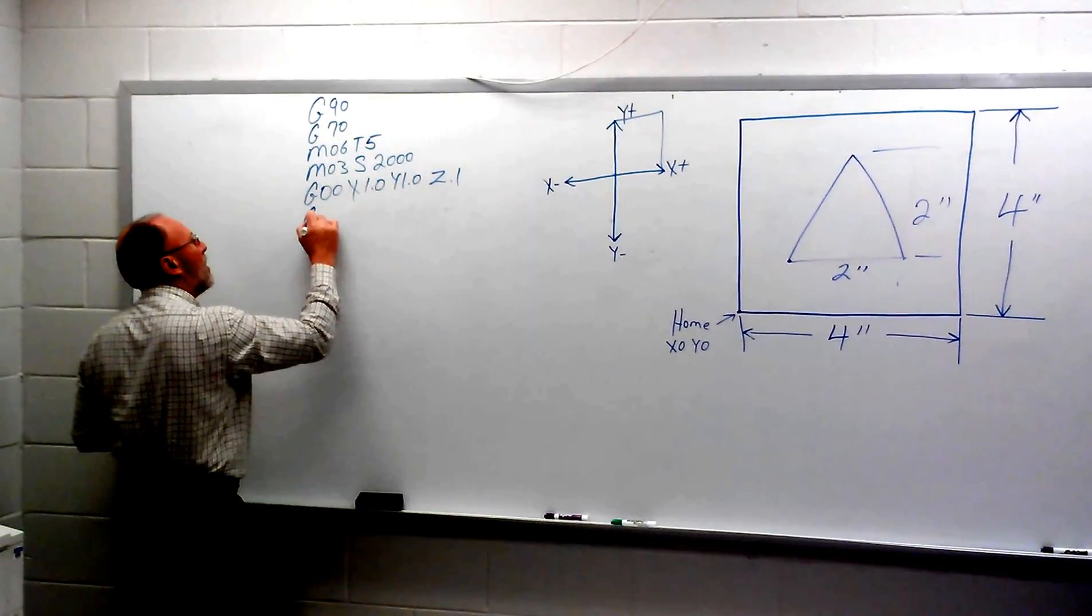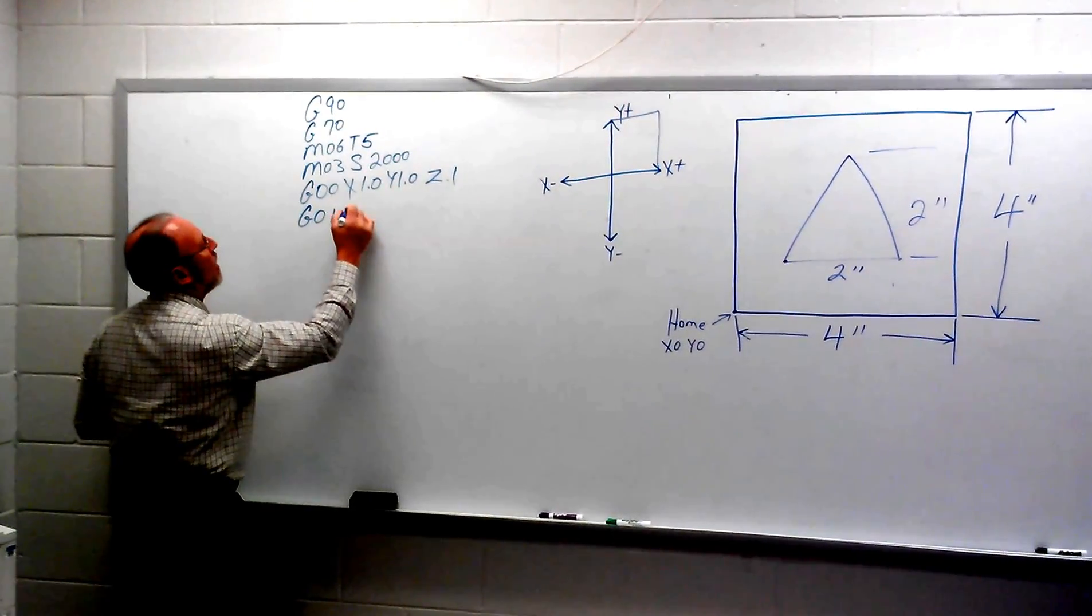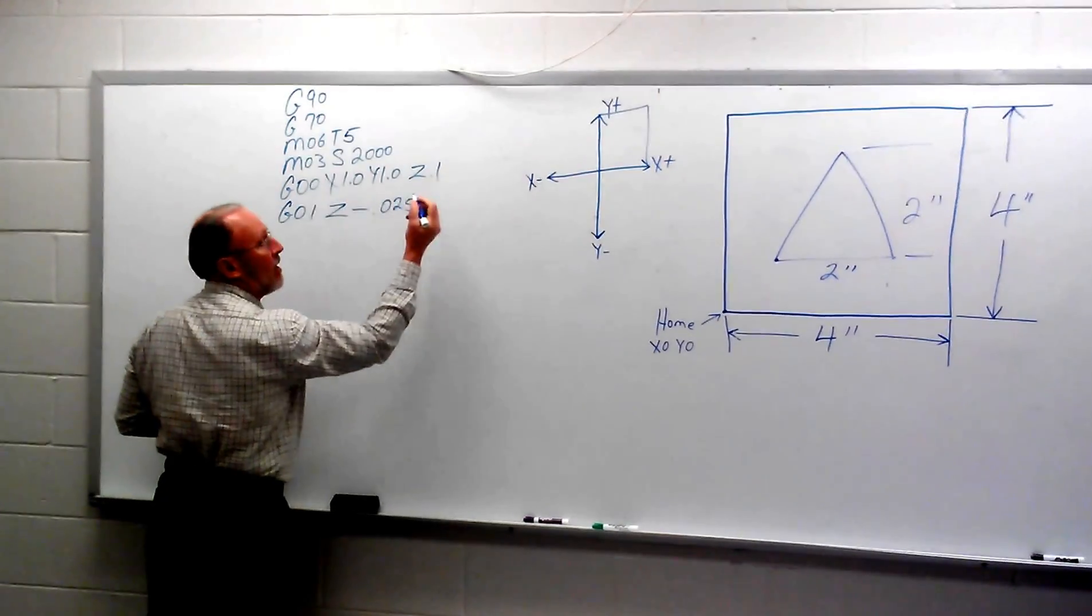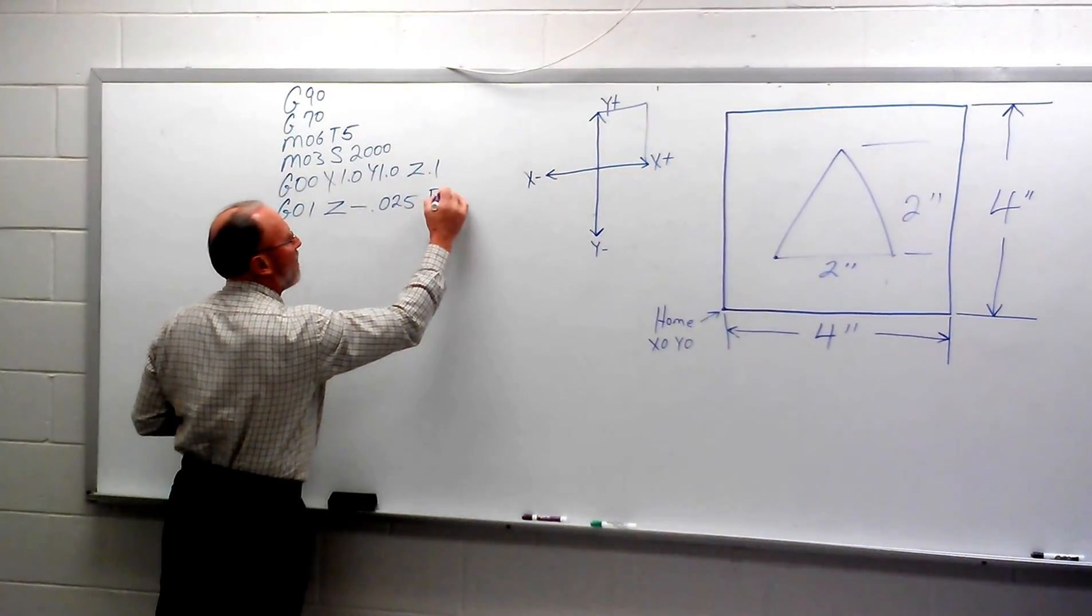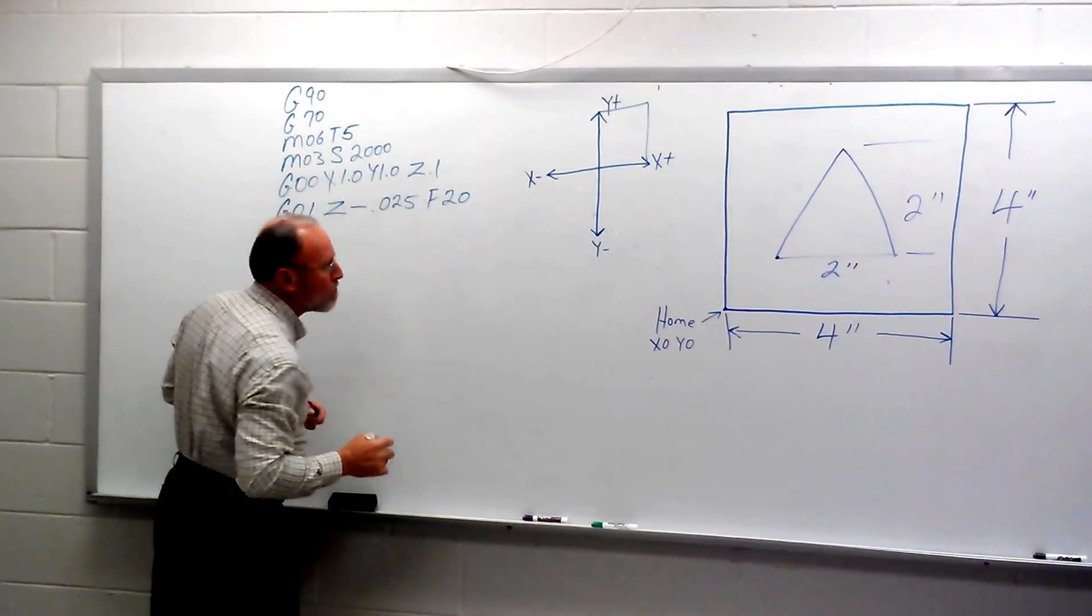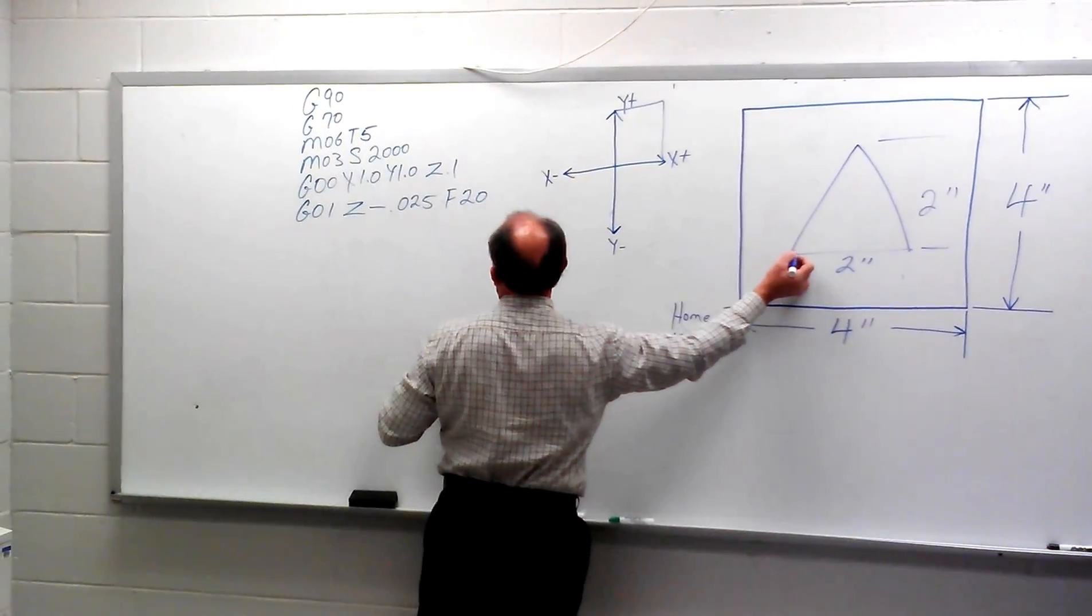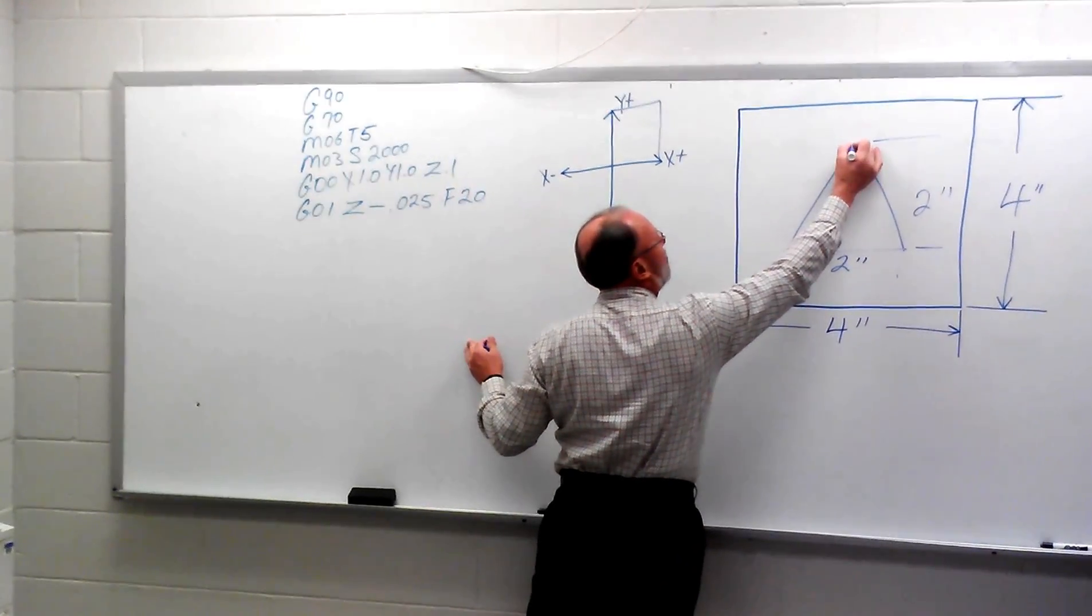Pull the tool bit down like we did a while ago, G01, Z minus .025 with a feed rate of the same thing, feed 20 inches per minute. Now we can go ahead and start traveling. We're down inside the workpiece here, and I need to get to this point.